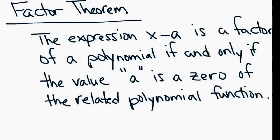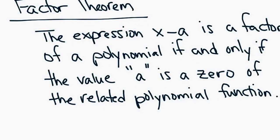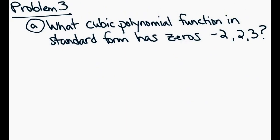The factor theorem says that the expression x minus a is a factor of a polynomial if and only if the value of a is a zero of the related polynomial function. In other words, if x minus 2 is a linear factor, that means x equals 2 has to be a location where the graph hits the x-axis — otherwise it's not actually a factor. The reason a cubic function has three zeros is because a cubic function can have up to three zeros, though it can actually have less. We'll talk about that in another lesson.